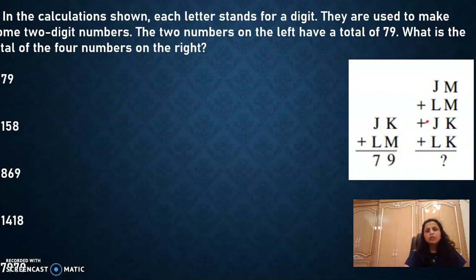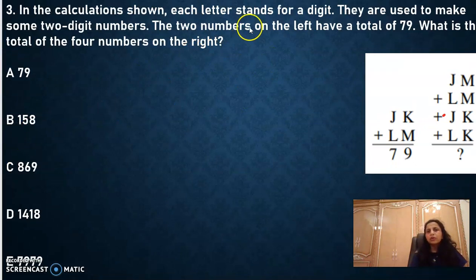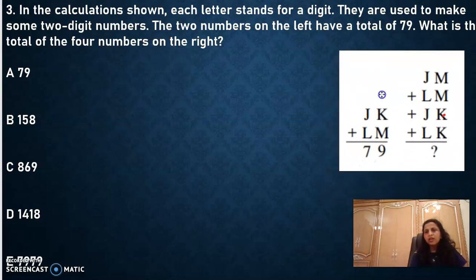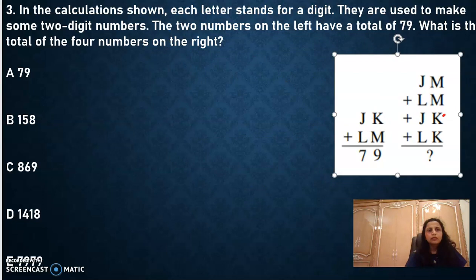So the question looks a little bit tough, but it was very very easy. Now you see this question. So in the calculation shown, each letter stands for a digit, right? And they're used to make some two digit numbers. So some two digit numbers are given. And the two numbers on the left have a total of 79. So sum is given as 79.